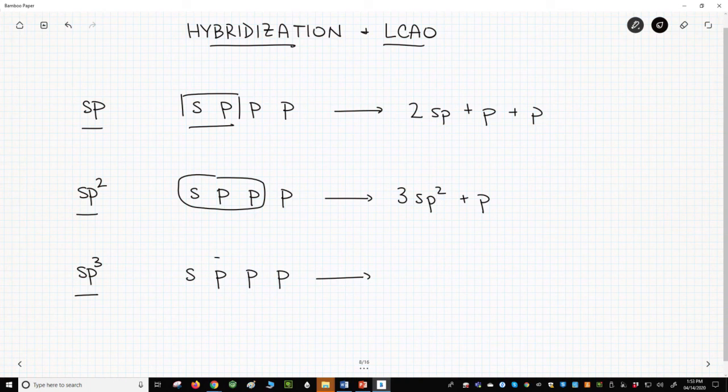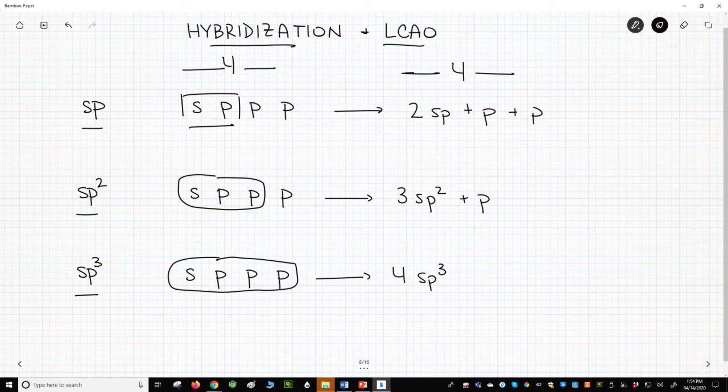For sp3, four sp3 hybrids. My first point is that the number of orbitals is conserved. We start with four atomic orbitals. After hybridization, we still have four atomic orbitals. This idea is also encountered in MO theory. Orbitals are conserved.